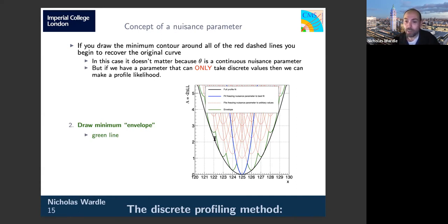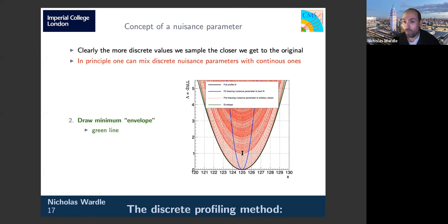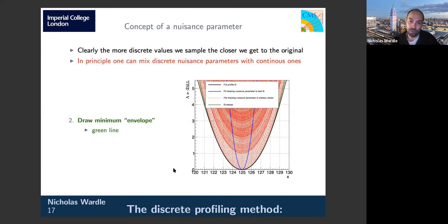This is exactly what we mean by profiling: at each value of x we take the maximum likelihood estimate of theta. If we only did it for a few discrete points we'd get a funny-looking curve, but the more points we have, the smoother it looks. The reason for going through this convoluted explanation is that we can think of a discrete nuisance parameter as just being a particular choice of that value theta — and that's what I'm going to call my choice of model.